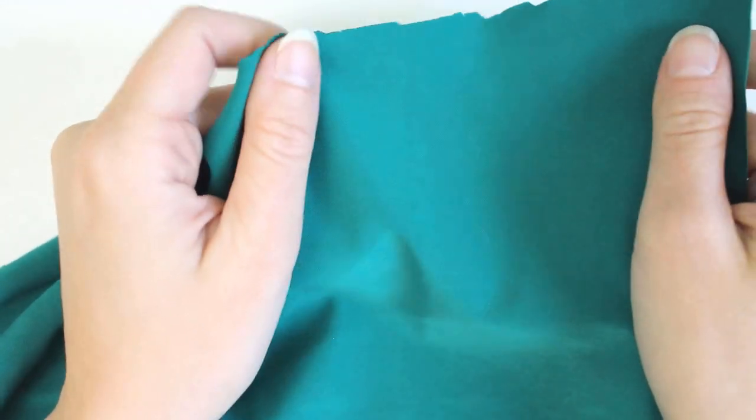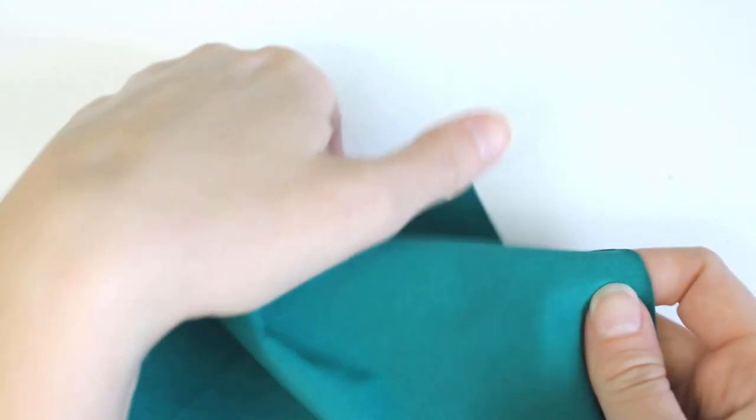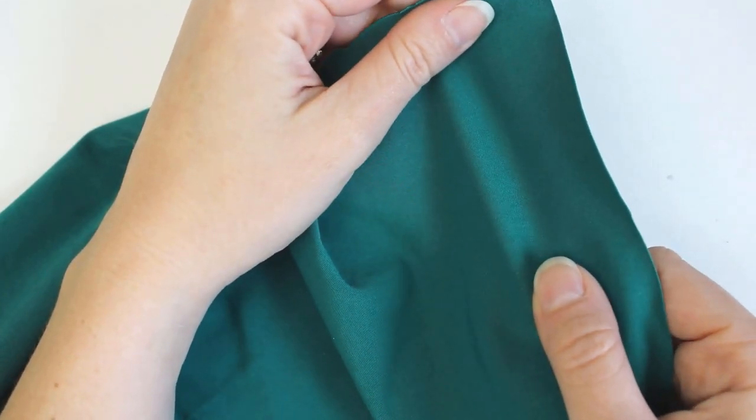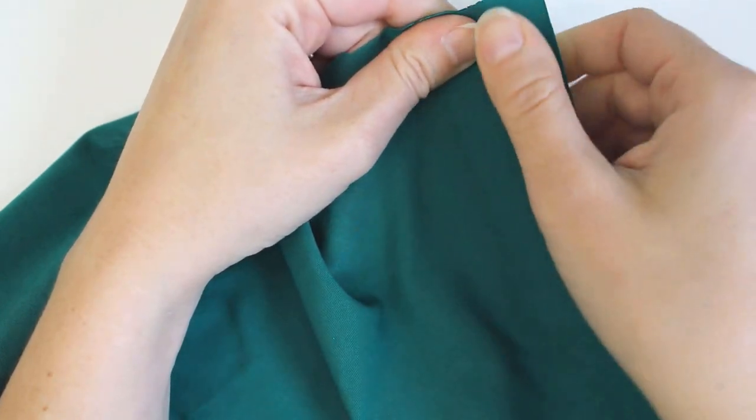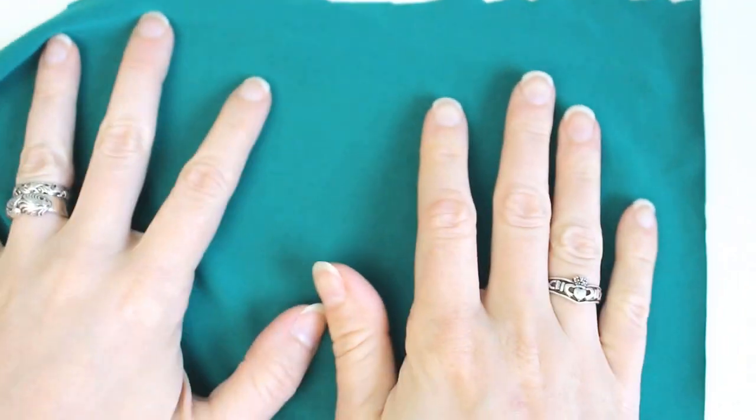If you're having trouble seeing the grain in a knit fabric, like me with this spandex, you can determine which direction to lay the pattern based on how stretchy the material is. Knit fabrics are almost always more stretchy from side to side than up and down. Looks like I have this one laying the right direction.